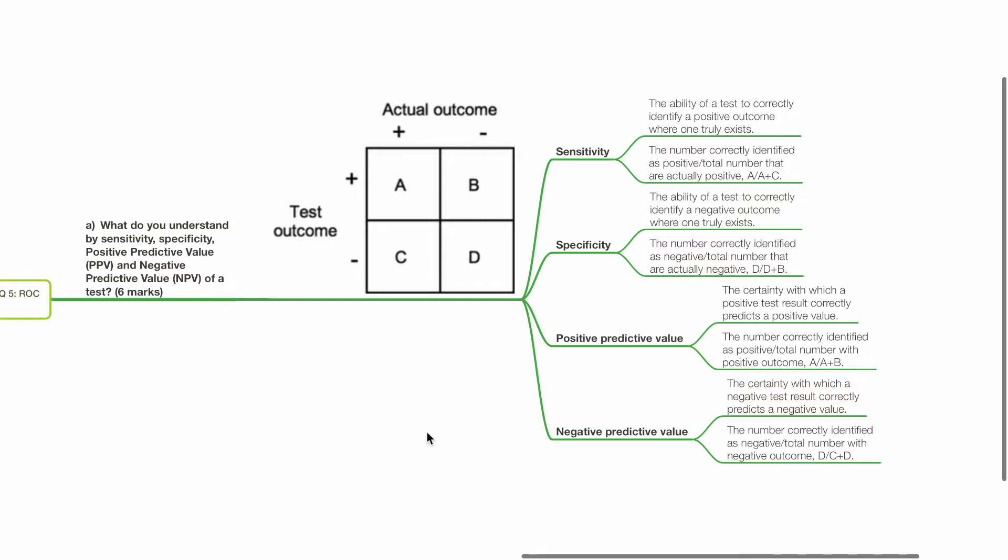Negative predictive value is the certainty with which a negative test result correctly predicts a negative value. It is the number correctly identified as negative divided by total number with negative outcome. D divided by C plus D.